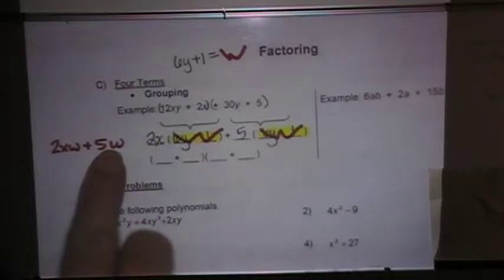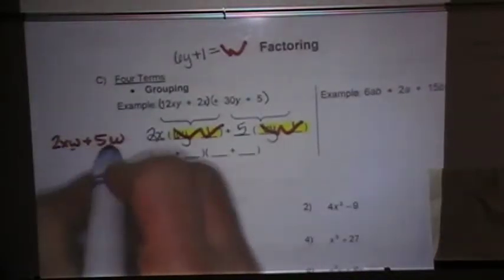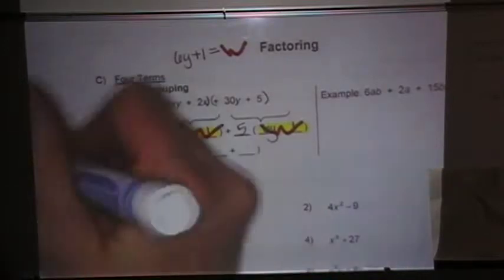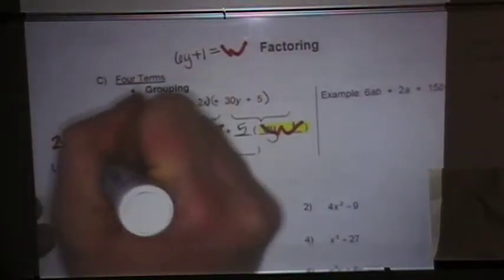Now, the reason I do that is because it makes it a little easier to see that this binomial has a GCF. It has a GCF of w. Right here, both terms have a w. So I'm going to factor that w out, and that would give me 2x plus 5.